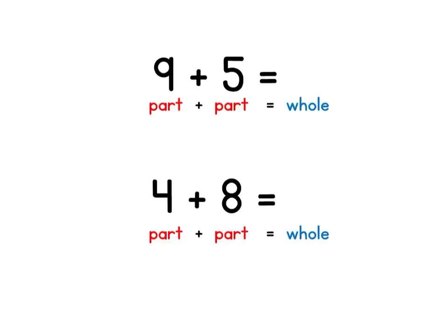Let's take a look at when we would use the Make 10 strategy. We use the Make 10 strategy when one of the parts in a number sentence is close to 10. If one of the parts in a number sentence is a 9, 8, or 7, then this is an effective strategy to use because all those numbers are fairly close to 10.